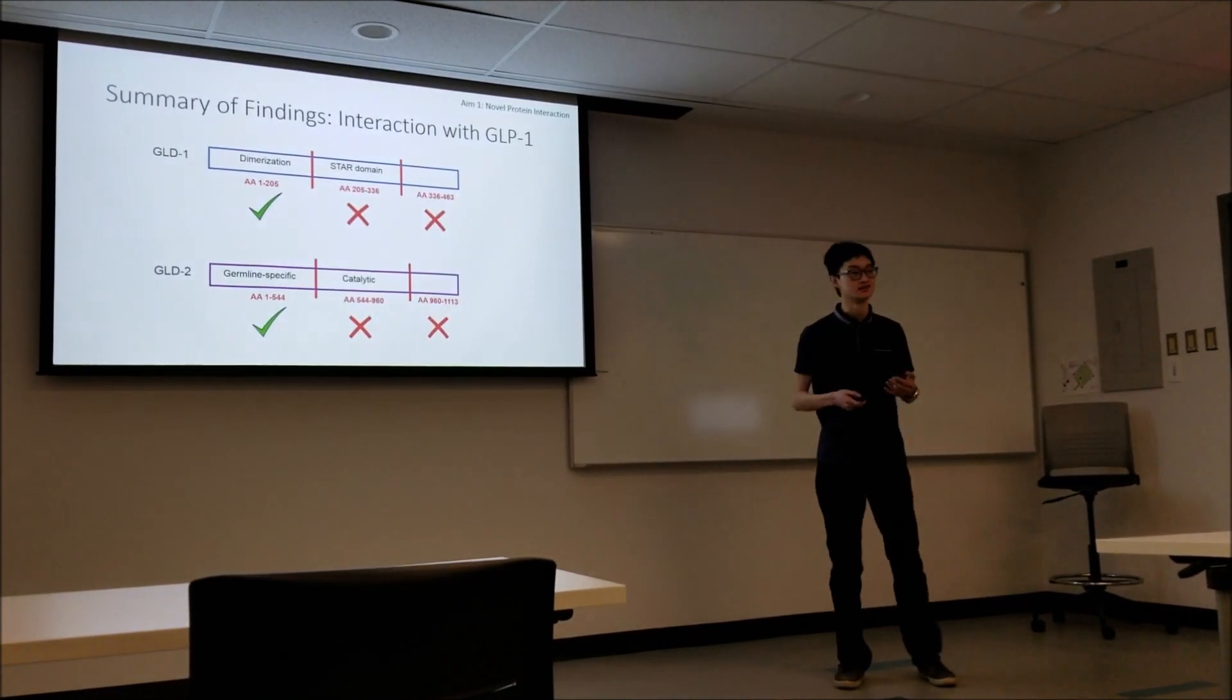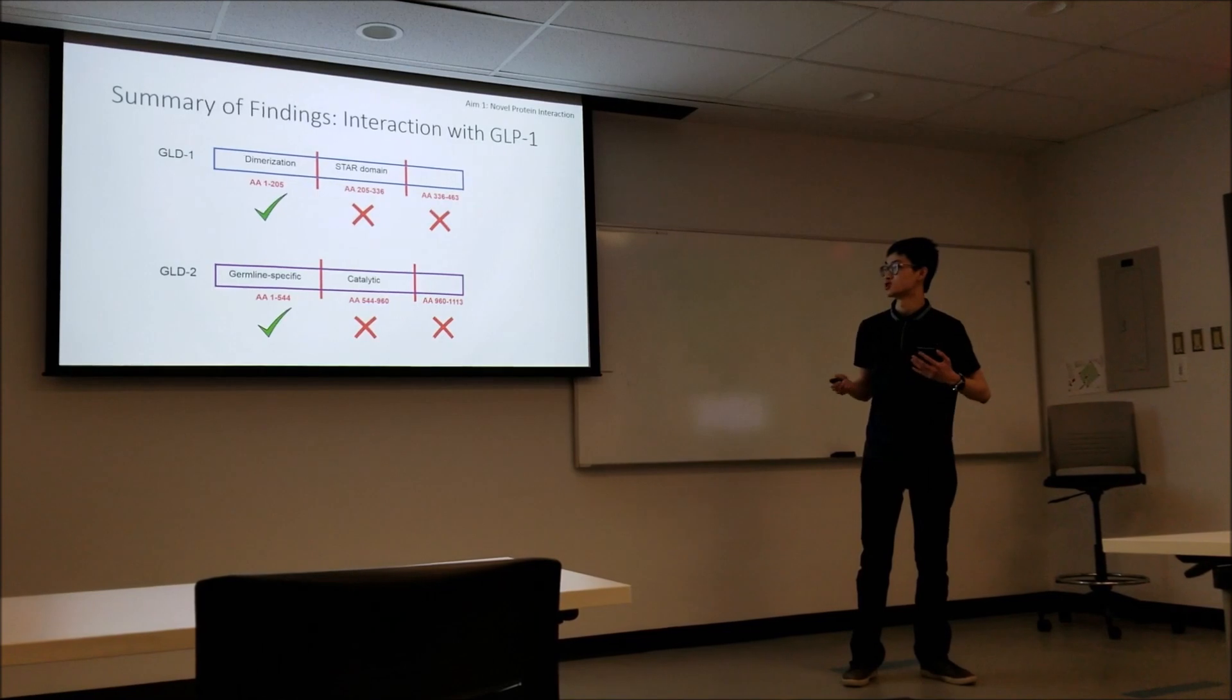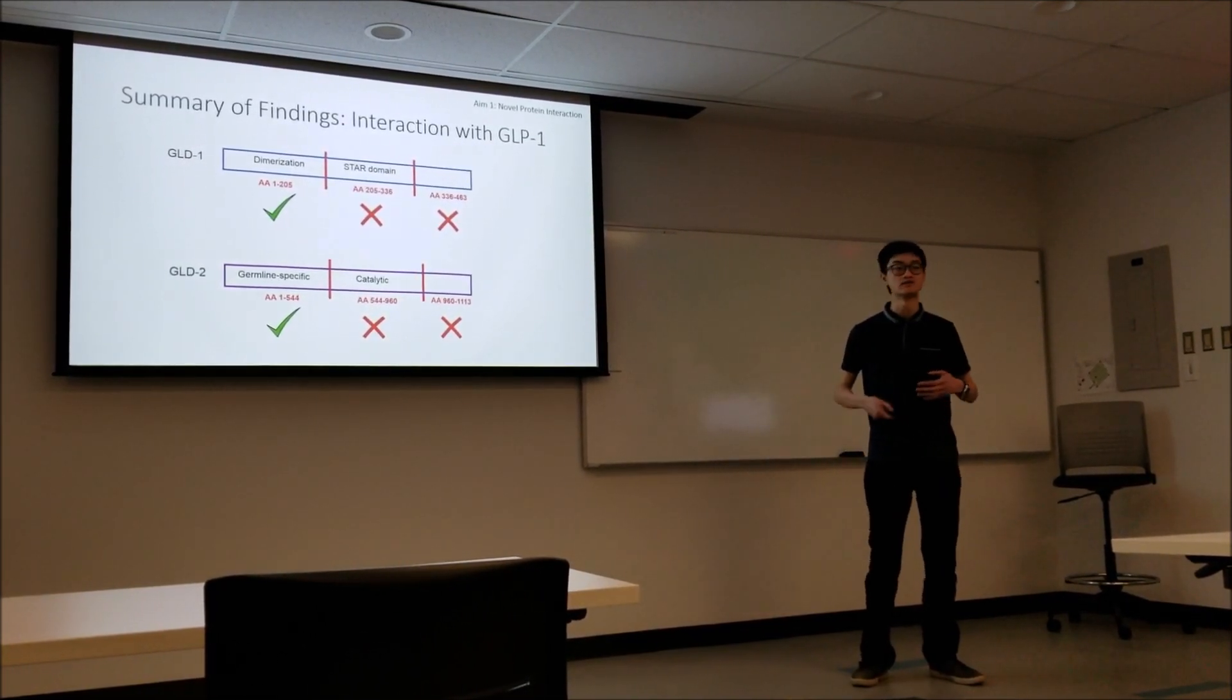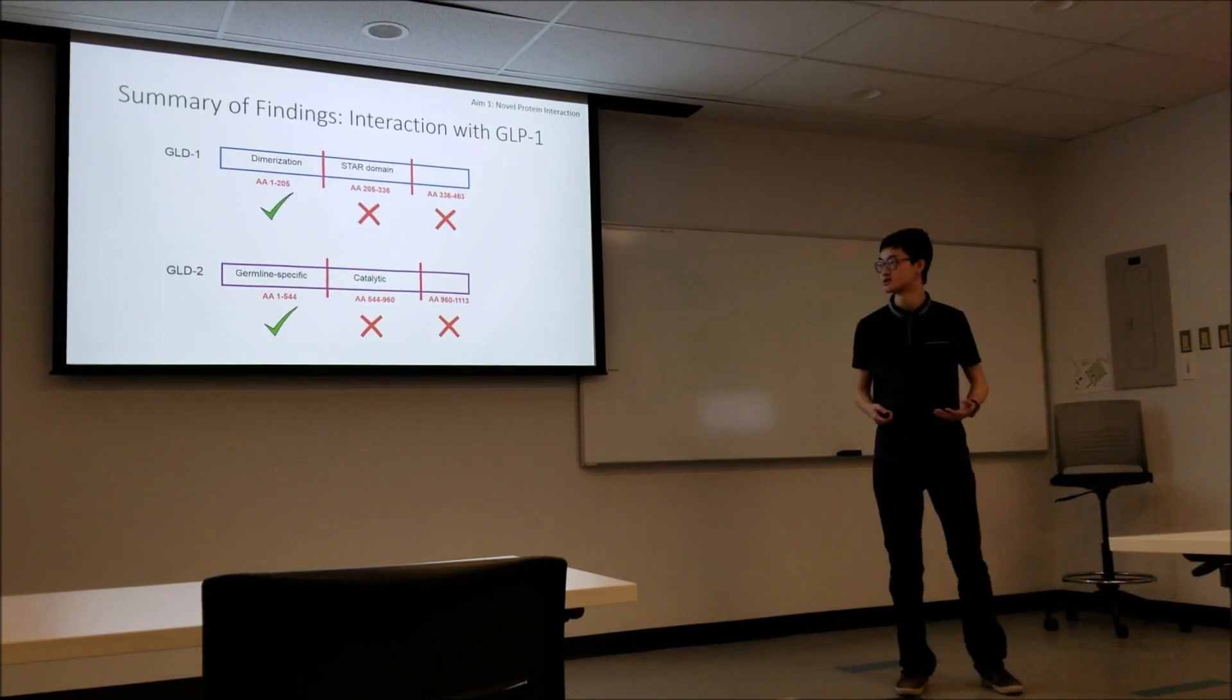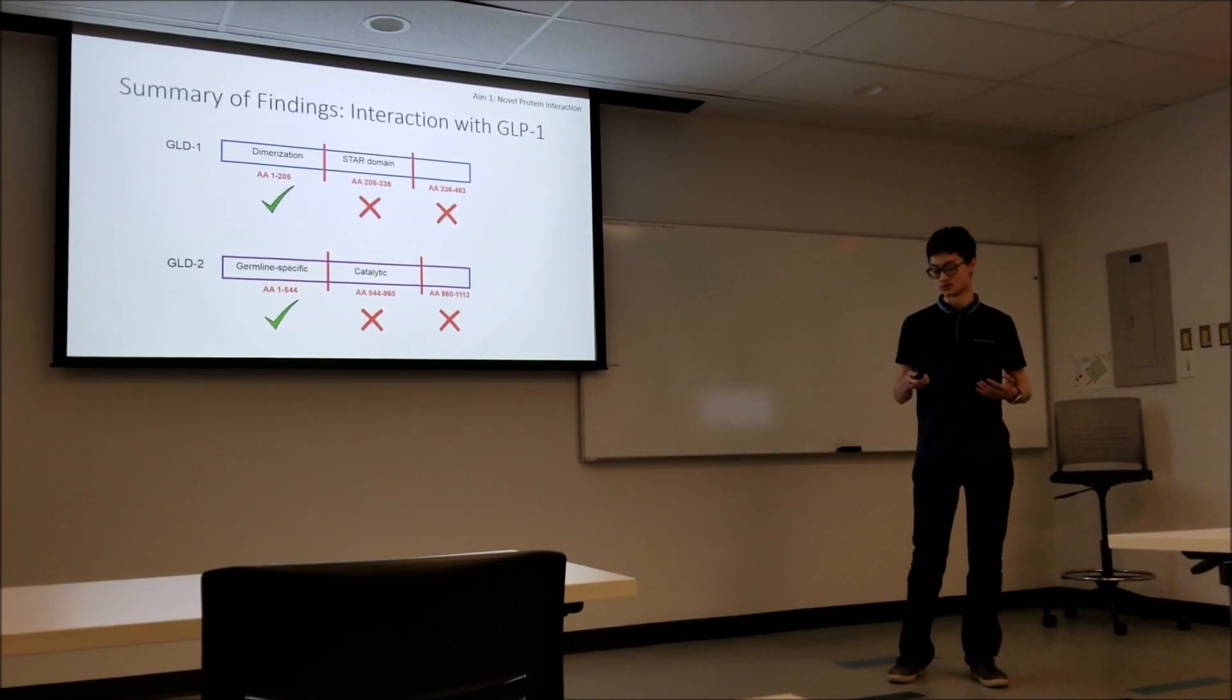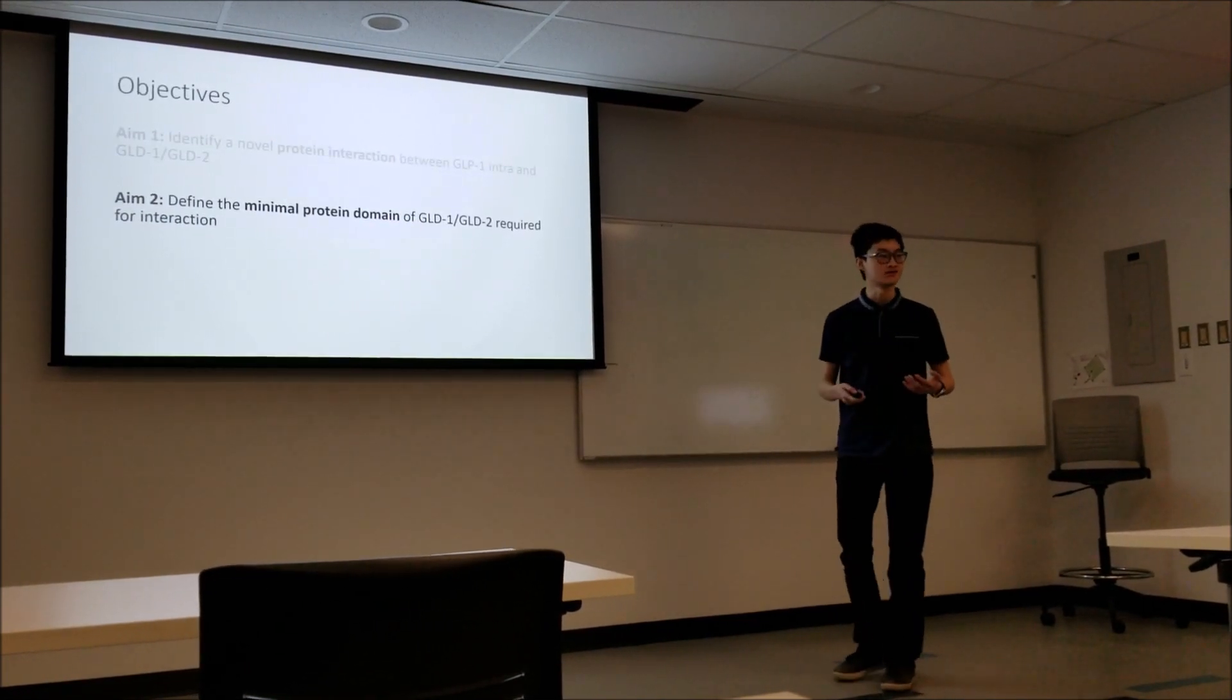In both these cases, it happens to be the N-terminal domain of both these proteins. For GLD1, this first 1-205 amino acids, this dimerization region. For GLD2, it's this germline-specific region that seems to be doing the interaction. That's great, that was the first aim. We found the interaction.